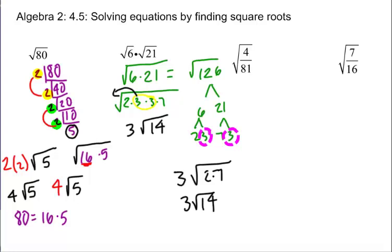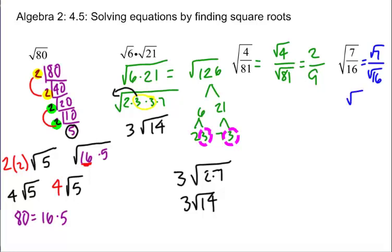With division, the square root of 4 divided by the square root of 81: the square root of 4 is 2, the square root of 81 is 9, and that's all there is to it. The last one is the square root of 7 over the square root of 16. The square root of 7 we don't know — it's not a perfect square, so it stays as square root of 7. The square root of 16 is 4. So you get square root of 7 over 4.